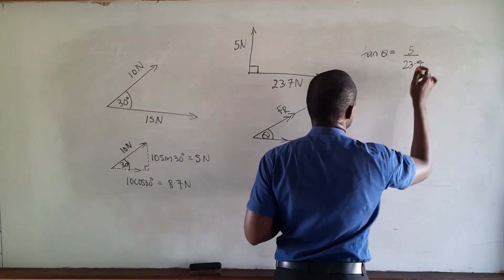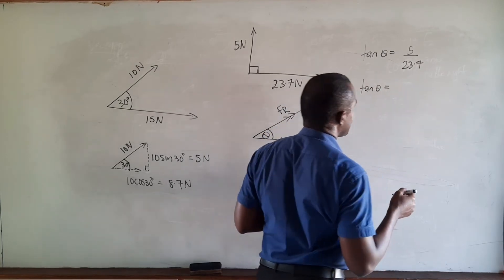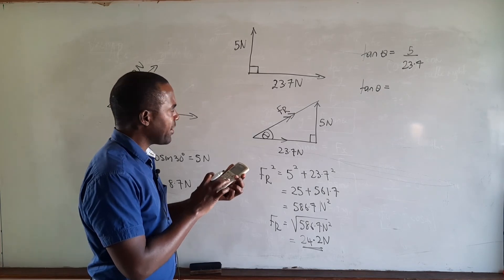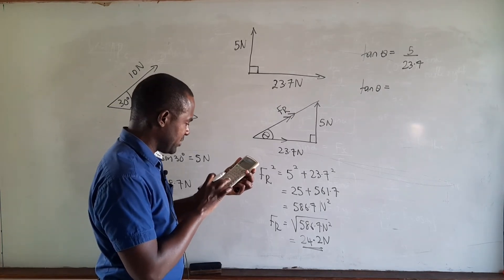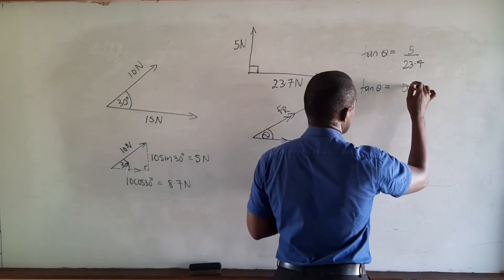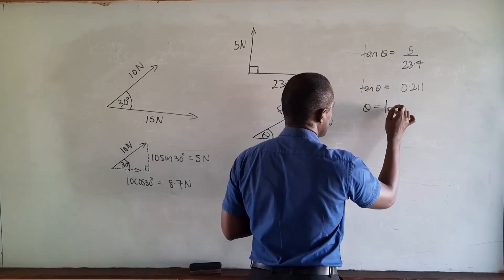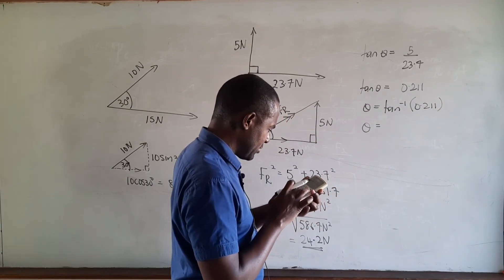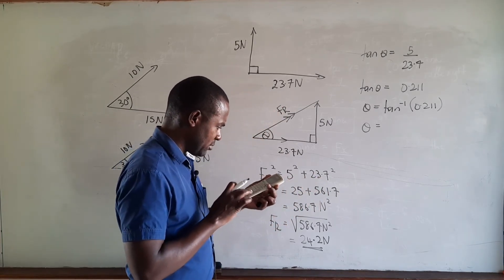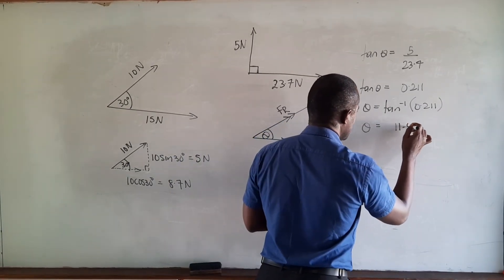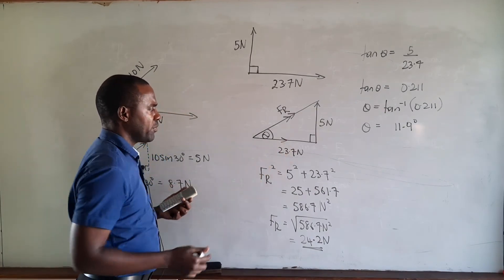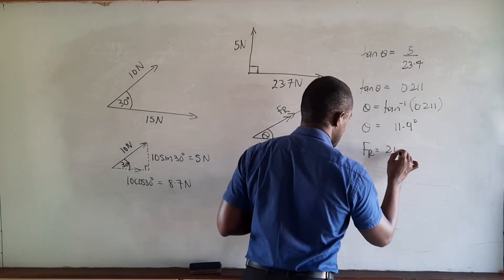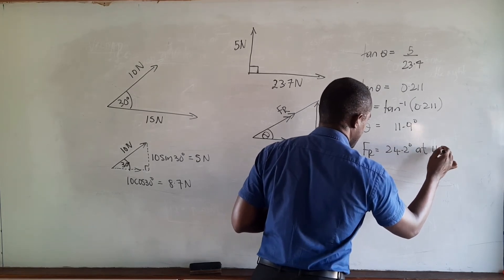So tan theta equals 5 divided by 23.7, which gives 0.211. Therefore theta equals the inverse tan of 0.211, which gives us 11.9 degrees. So theta equals 11.9 degrees to the 23.7 Newton horizontal force, and we can state that FR equals 24.2 Newtons at 11.9 degrees.